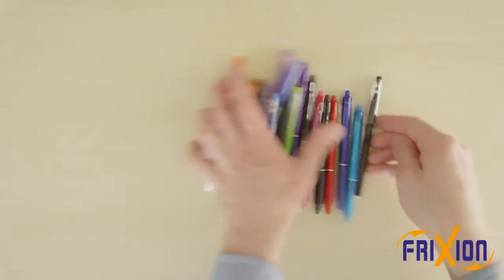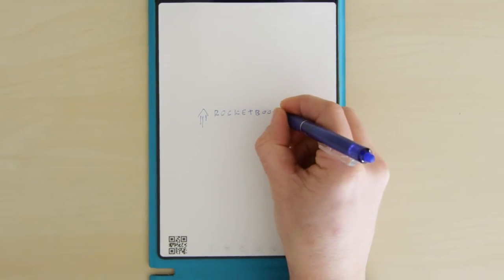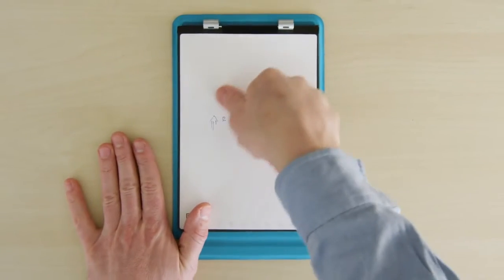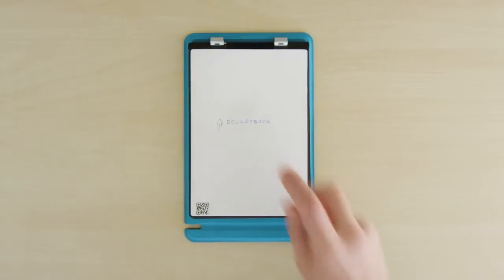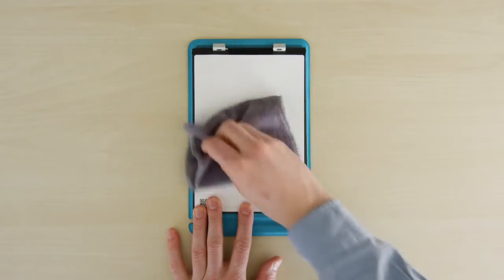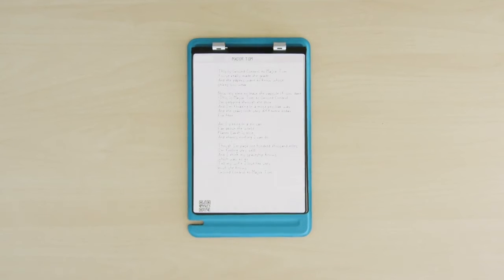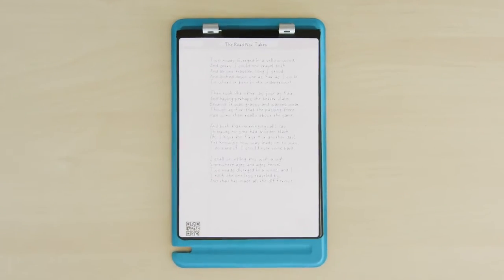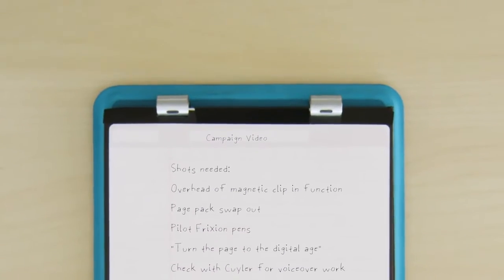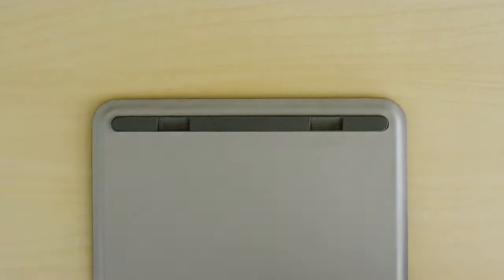Frixion ink firmly bonds to the pages in seconds but with a little water wipes away like magic so you can use the pages over and over. Orbit page packs snap into the binding using magnetic force.